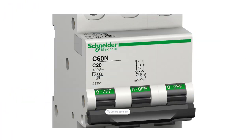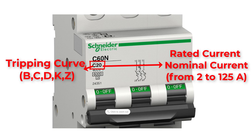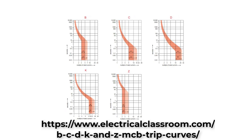Another factor here is C20. C is the tripping curve and 20 is the rated current or nominal current. We have five tripping curves: B, C, D, K, and Z. These curves describe the trip current rating of the miniature circuit breaker.